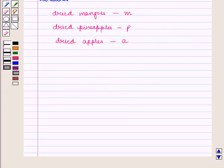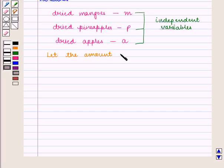Here, M, P, and A are independent variables. Let the amount of dried fruit mixture prepared be X. Then, X is the dependent variable.